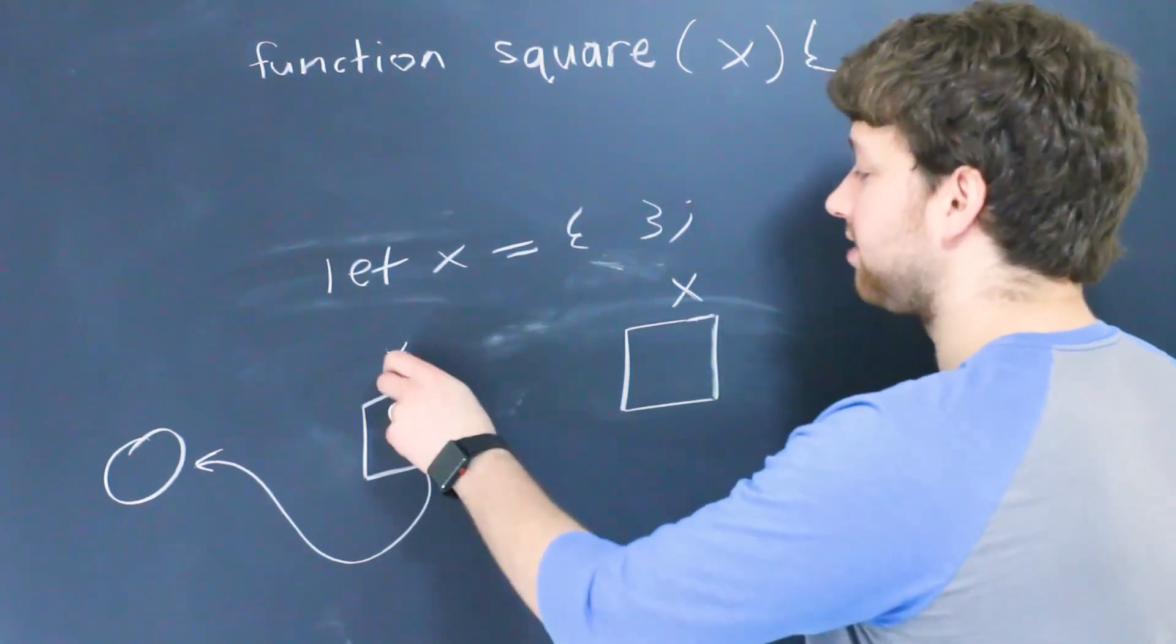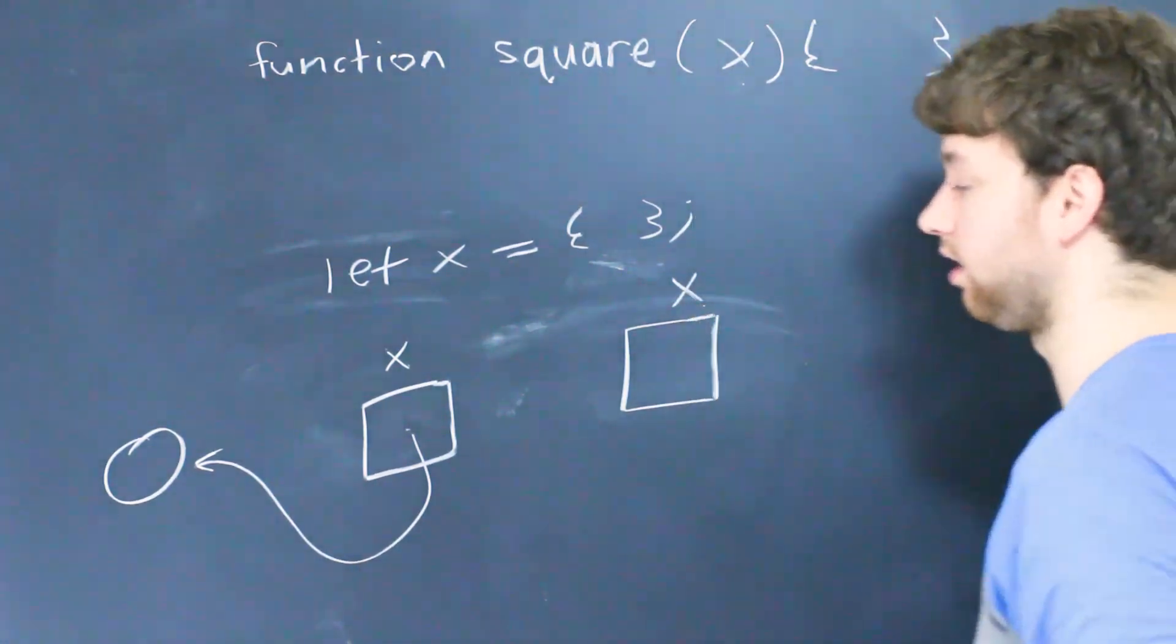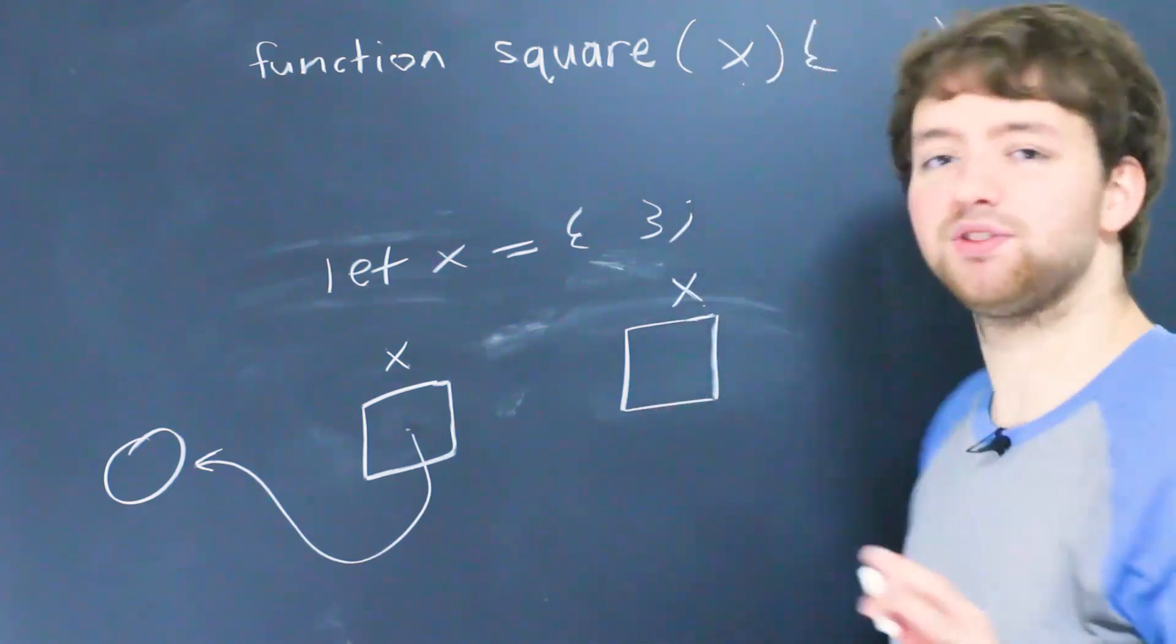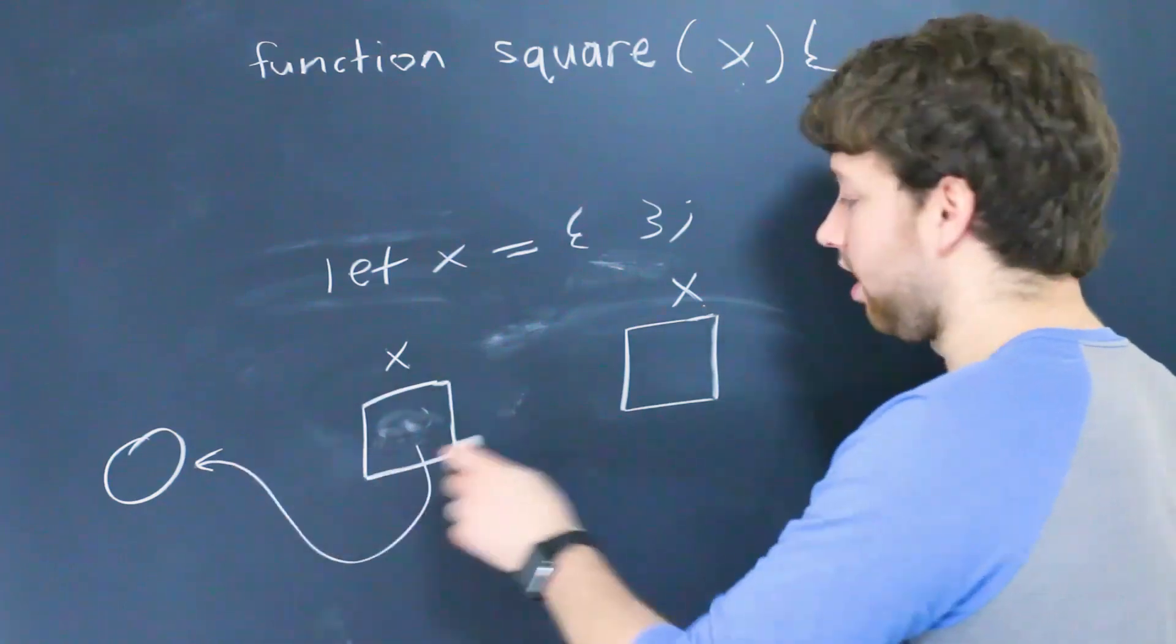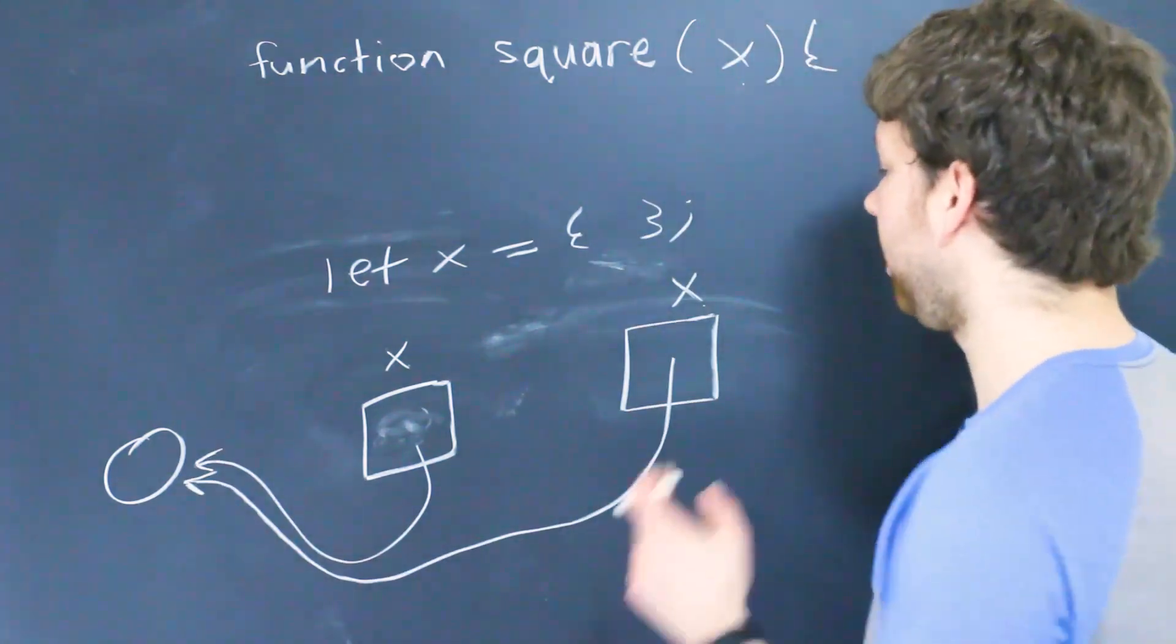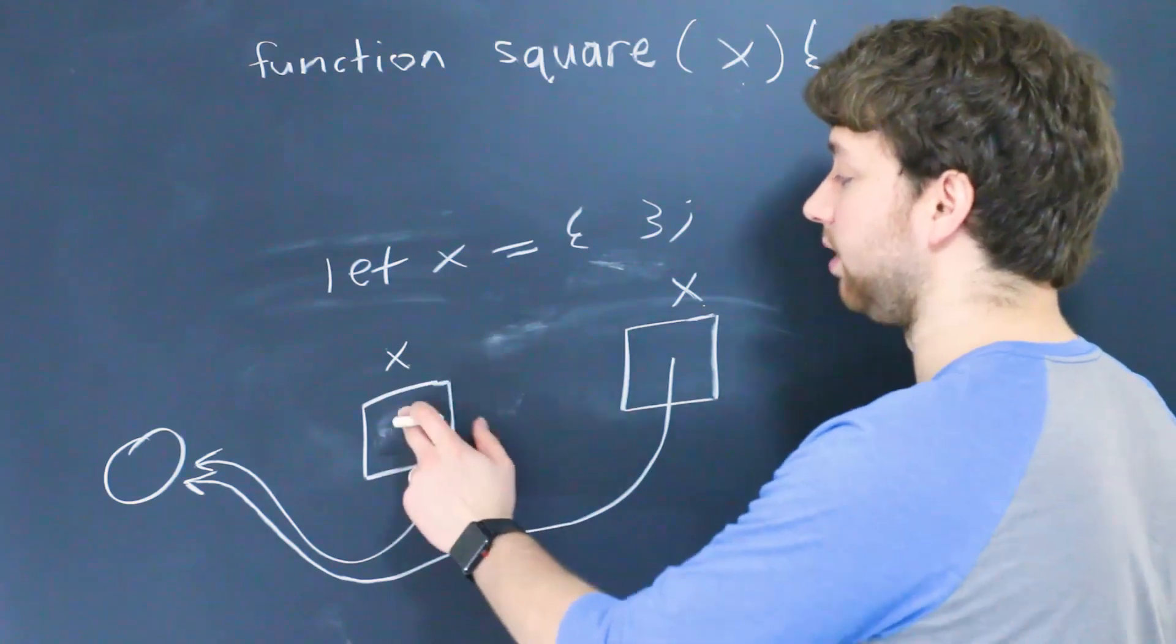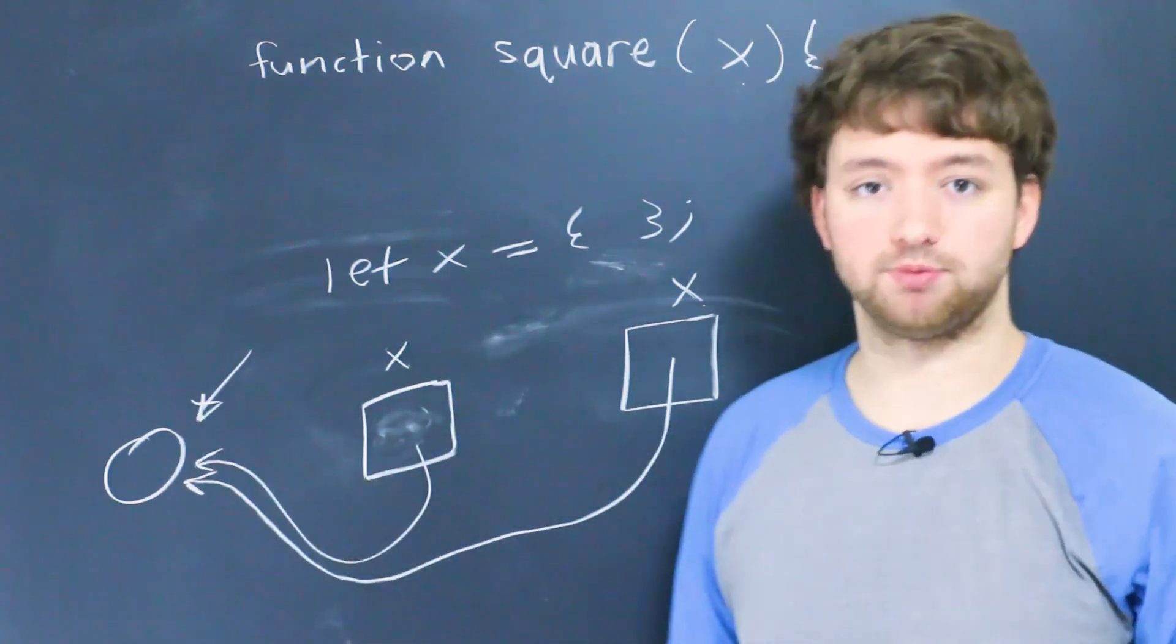Well now when we pass this X's value to this X's value, this one here, the thing that is passed is the value of that reference. And that's where things get a little bit confusing. So whatever the value of this is the location of that object is copied here and it also points to that same object. So now if we change that object inside of this function it's going to be visible outside of the function because they both point to the same area of memory, the same object.